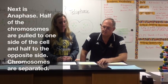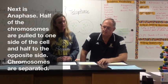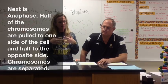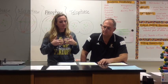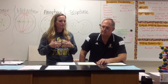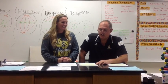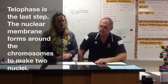Next is anaphase. This is when the separation occurs. Half of the chromosomes are pulled to one side of the cell, and half go to the other. We can remember this by: anaphase pulls chromosomes apart. Next is telophase, which is the grand finale. In telophase, the nuclear membrane forms around the chromosomes to make two nuclei.